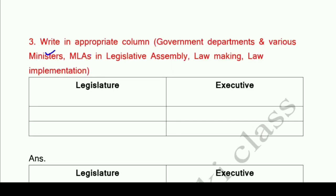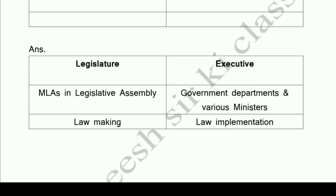Question number three: Write in the appropriate column — government departments, various ministers, MLAs in legislative assembly, law making, law implementation. The answer: Under Legislature — MLAs in legislative assembly and law making. Under Executive — government departments, various ministers, and law implementation.